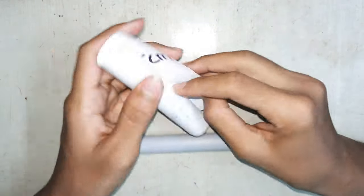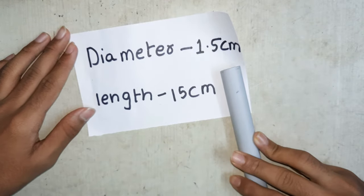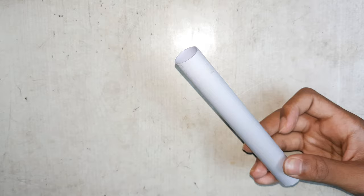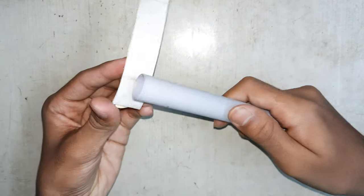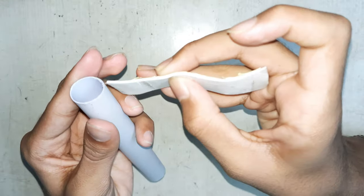Now take another PVC pipe of diameter 1.5 centimeters and length 15 centimeters. Take the double-sided tape and stick it to the pipe to increase the width of the PVC pipe.